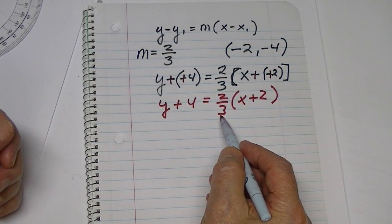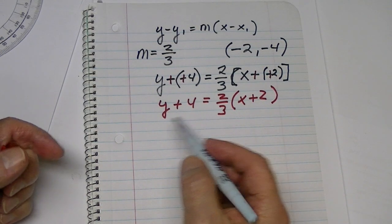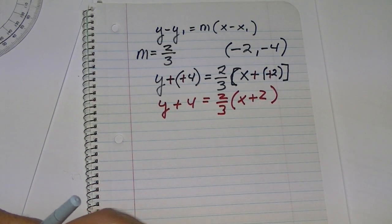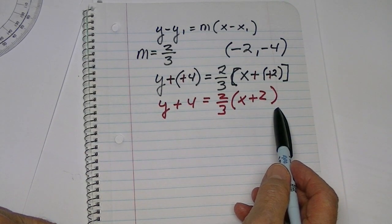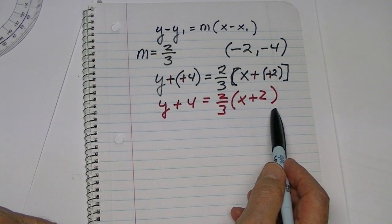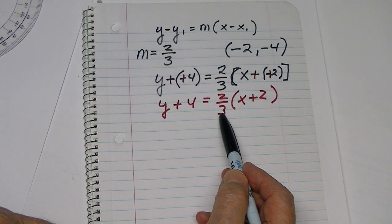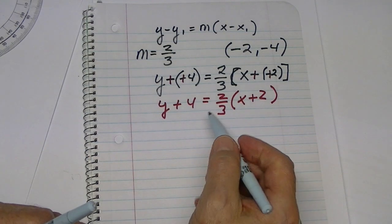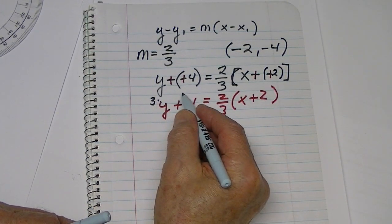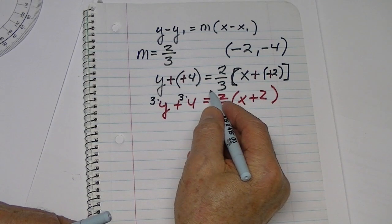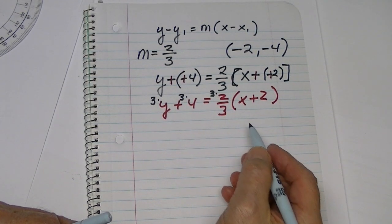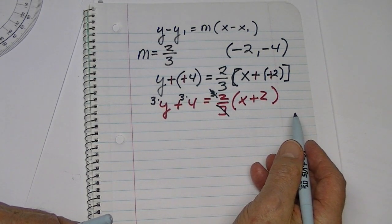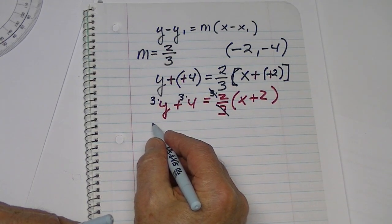We have this fraction, and as mentioned, anytime you have a fraction in an equation the best way to treat it is to multiply every term by that common denominator. So I'm going to multiply every term by three. Notice now the threes cancel out and we don't have fractions anymore.